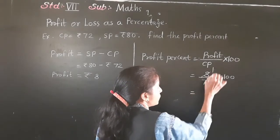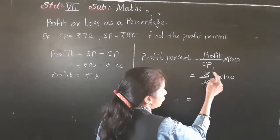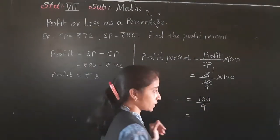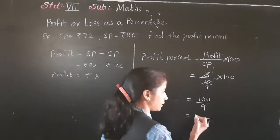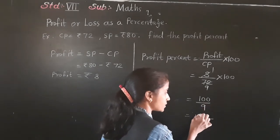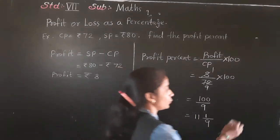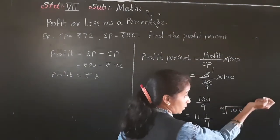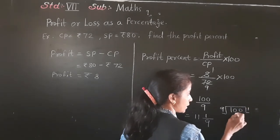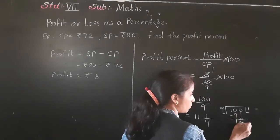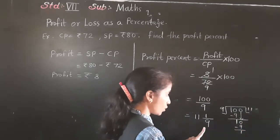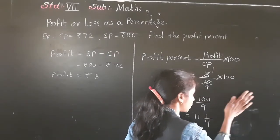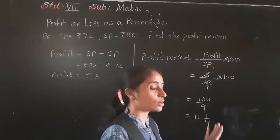Now calculate: 8 upon 72 multiplied by 100. Simplify — 8 ones are 8, 8 nines are 72, giving 1 upon 9 multiplied by 100, which equals 100 upon 9. Converting to a mixed fraction: 11 remainder 1, so the answer is 11 and 1 upon 9. Profit percent is 11⅑.